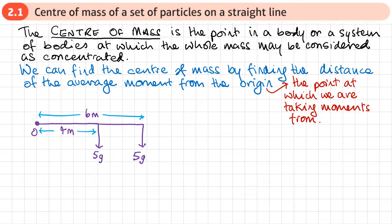So how would we calculate that distance? What we're going to do is calculate each moment. We'll start with the one which is four metres away with mass 5g times by four. So that's going to be this moment here. And I'm going to add to it this moment here.